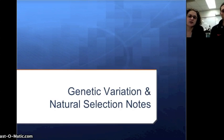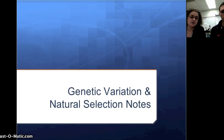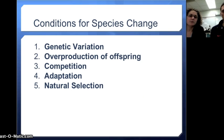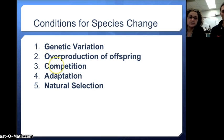Hi guys, today we're going to talk about how genetic variation and the environment work together to explain natural selection. There are a few conditions you need to become familiar with: genetic variation, overproduction of offspring, competition, and adaptation. We'll use those to explain natural selection and go through each in a bit more depth.